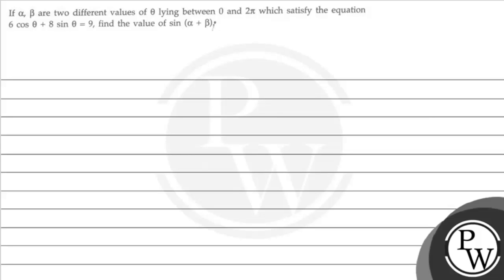Hello students, let's see the question. The question says that if alpha and beta are two different values of theta lying between 0 to 2π which satisfy the equation 6cosθ + 8sinθ = 9, then find the value of sin(α + β). Basically you have to solve this trigonometry equation.